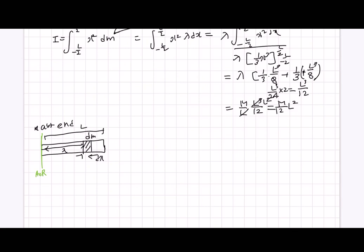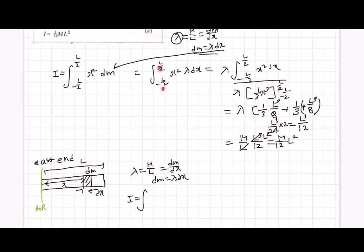Everything is the same. You can say that lambda is m over L, and therefore dm over dx, and dm equals lambda dx. And you would have I. But this time, the limit would be different.